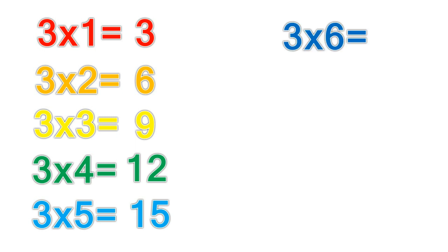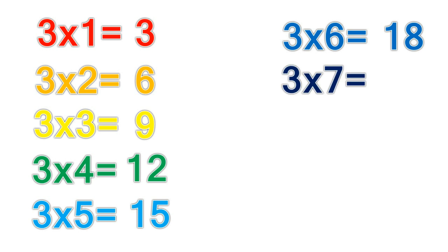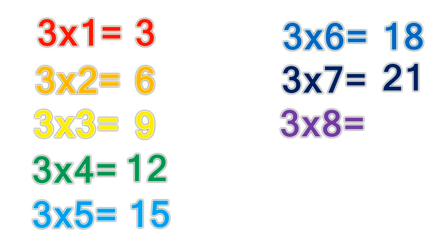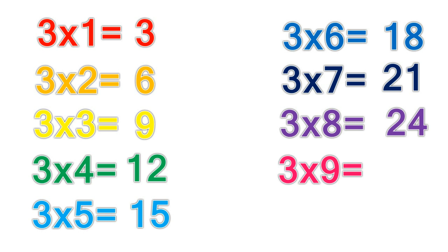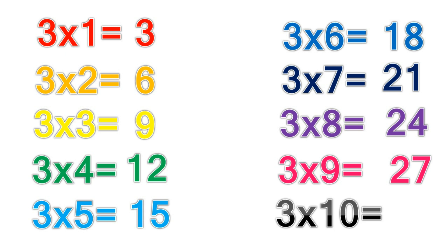3 times 6 equals 18. 3 times 7 equals 21. 3 times 8 equals 24. 3 times 9 equals 27. 3 times 10 equals 30.